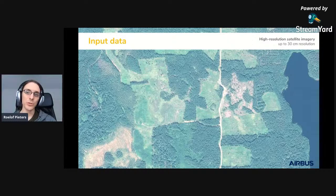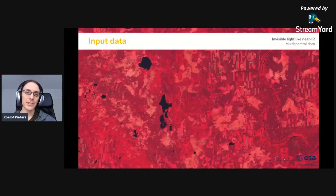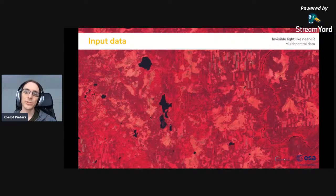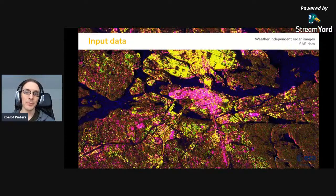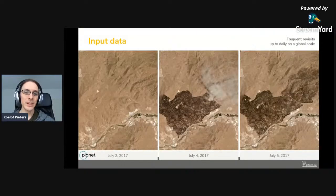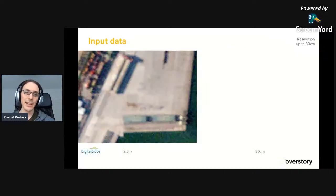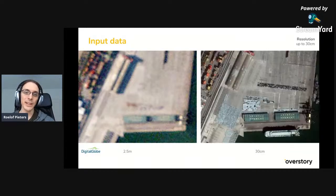Other data sources include multi-spectral data beyond just RGB, which is very useful for understanding the health of vegetation. There is also weather-independent radar that can look through clouds — useful since many forests are always covered by clouds. We can capture things on multiple scales and make frequent revisits over time. Input data ranges from very low resolution on the left to higher resolution on the right.